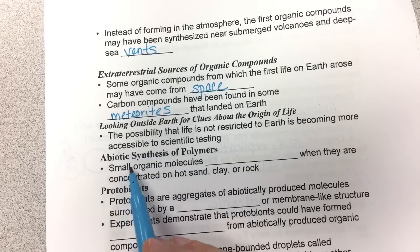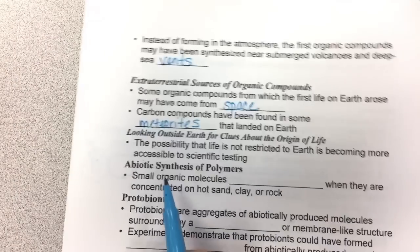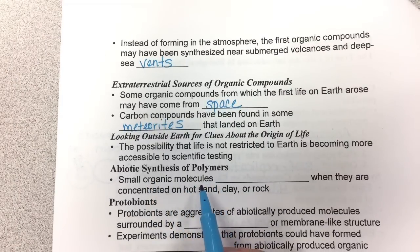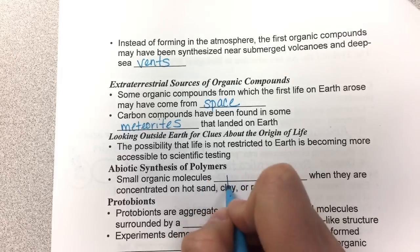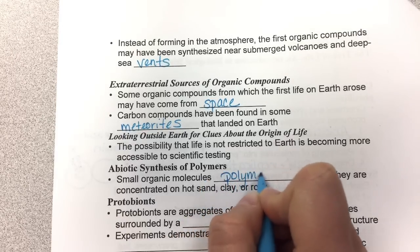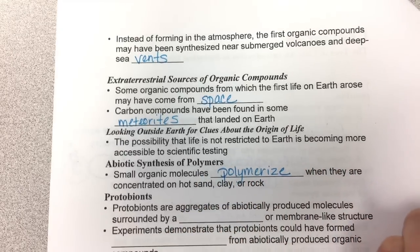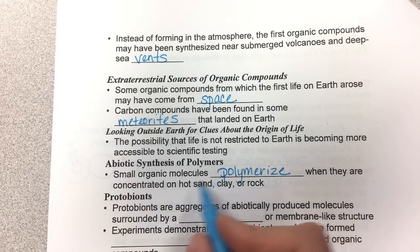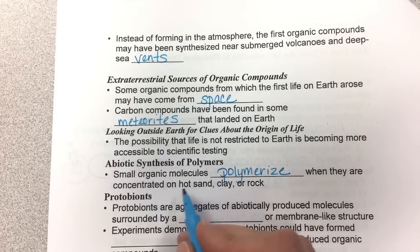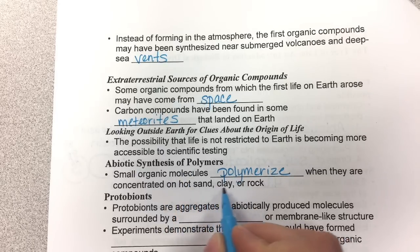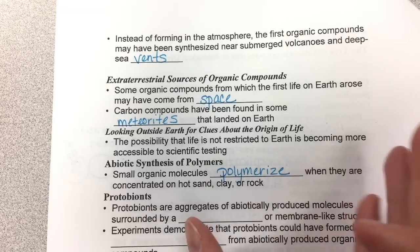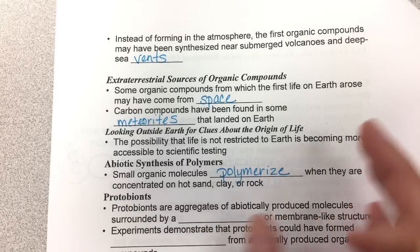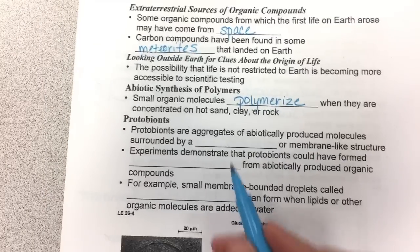Step two is the abiotic synthesis of polymers. Small organic molecules polymerize — that's the process of making a polymer — when they are concentrated on hot sand, clay, or rock. They found that putting small organic molecules onto warm sand, clay, or rock causes them to polymerize and form polymers. So it's possible that this may have happened on early Earth.